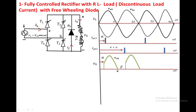At pi plus alpha, T3 and T4 are turned on. Once T3 and T4 are on, the output voltage follows the input voltage of T3 and T4, that is the VBA voltage, up to 2pi. At 2pi, the output voltage is again subject to negative voltage, so the freewheeling diode conducts again and the load current is transferred from T3 and T4 to DF.